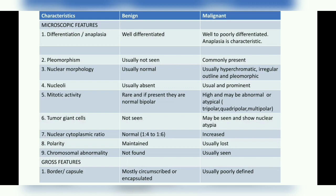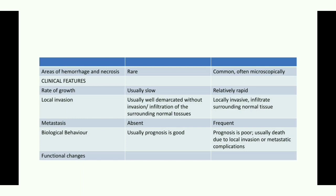In a benign tumor it is usually encapsulated with those two exceptions, whereas in a malignant tumor there is usually no capsule. It is not well circumscribed or demarcated from the surroundings, allowing invasion and infiltration into surrounding tissues, which also affects the prognosis. Areas of hemorrhage and necrosis are very rare in a benign tumor, but in a malignant tumor you can usually see central areas of ischemic necrosis.